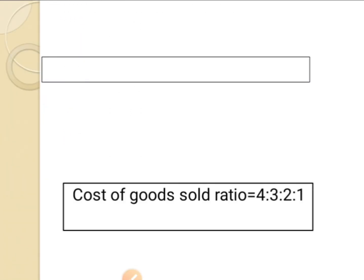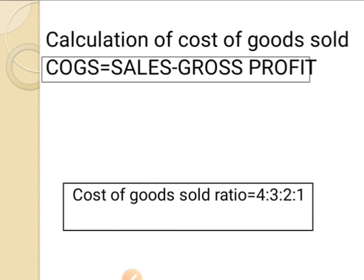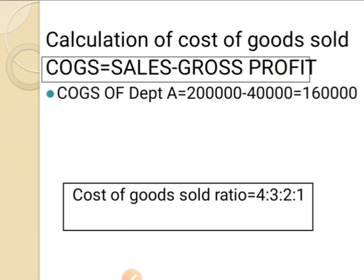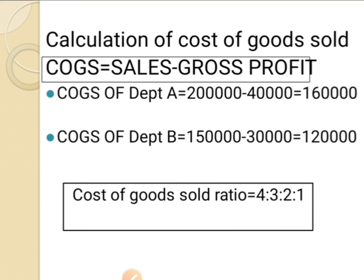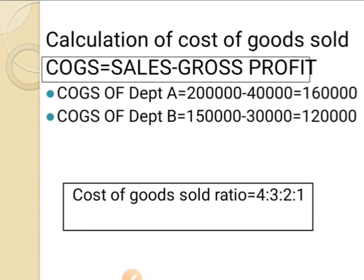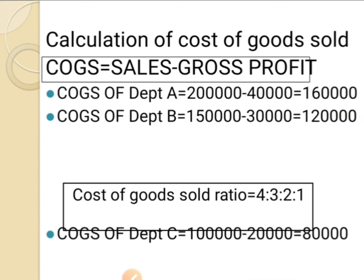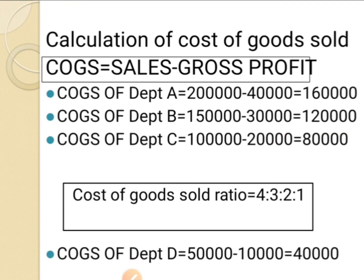Next, calculate the cost of goods sold ratio. Cost of goods sold equals sales minus gross profit. For department A: 2,00,000 minus 40,000 = 1,60,000. Department B: 1,50,000 minus 30,000 = 1,20,000. Department C: 1,00,000 minus 20,000 = 80,000. Department D: 50,000 minus 10,000 = 40,000. So the ratio is 1,60,000 : 1,20,000 : 80,000 : 40,000.